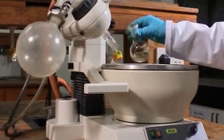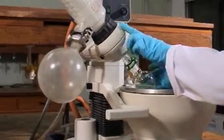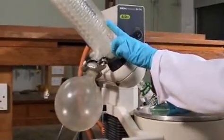We're going to put our flask on here and secure it with a clip. When we apply the reduced pressure the solvent is going to boil. The vapors will condense out on the condenser and drip down into the receiving flask.